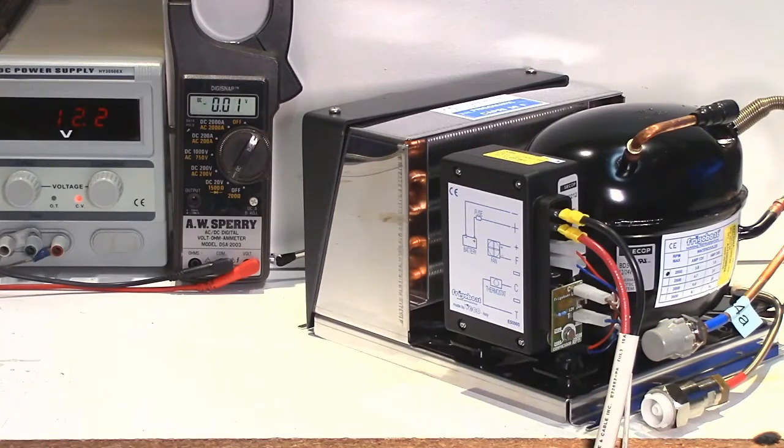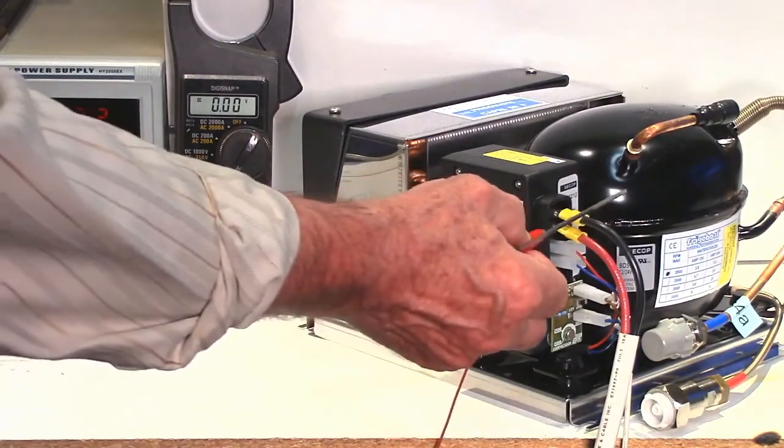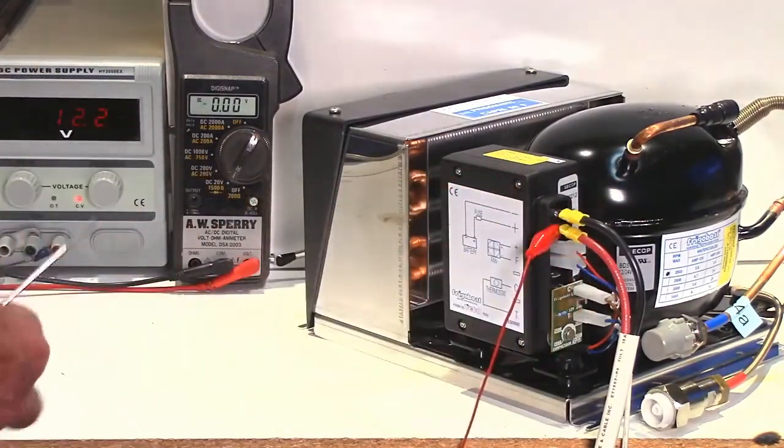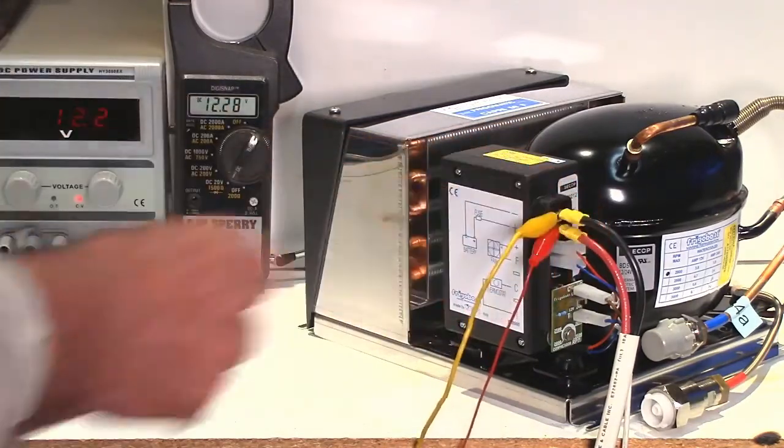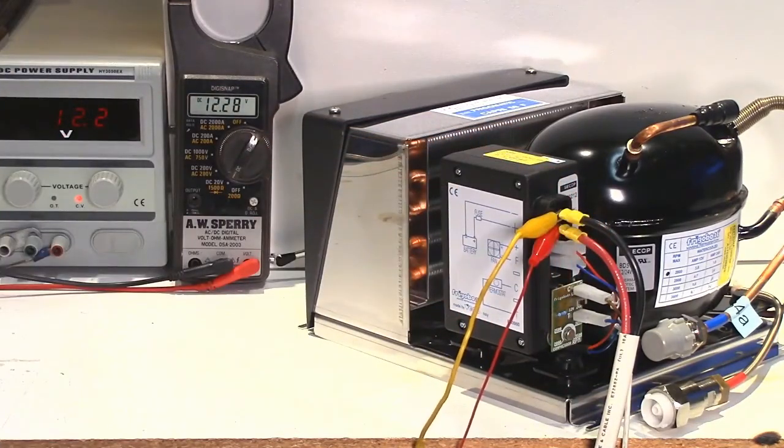What we're going to do is hook up another voltmeter, this multimeter here, and put it on the incoming power so that we can monitor the voltage right at the terminals on the compressor when the compressor tries to start. It's very important that you monitor it at the moment when the compressor tries to start.